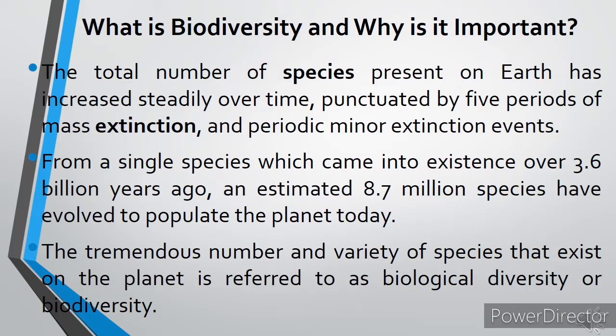What is biodiversity and why is it important? The total number of species present on Earth has increased steadily over time, interrupted by 5 periods of mass extinction and periodic minor extinction events. From a single species which came into existence over 3.6 billion years ago, an estimated 8.7 million species have evolved to populate the planet today. The tremendous number and variety of species that exist on the planet is referred to as biological diversity, or biodiversity.